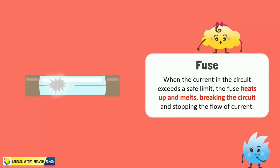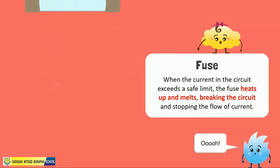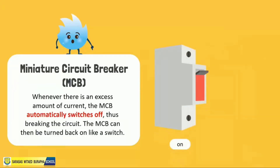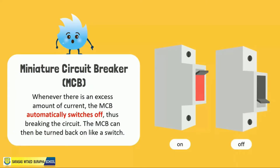Fuses protect against short circuits and overloading, but replacing a fuse again and again can be quite tiresome. To overcome this problem, automatic fuses called miniature circuit breakers (MCBs) are used. Whenever there is excess current flow, the MCB automatically trips off, breaking the circuit. It can then be turned back on like a switch without needing to replace anything.